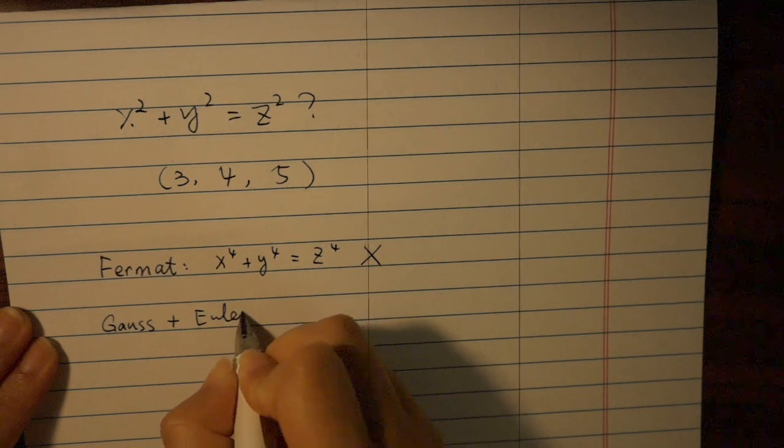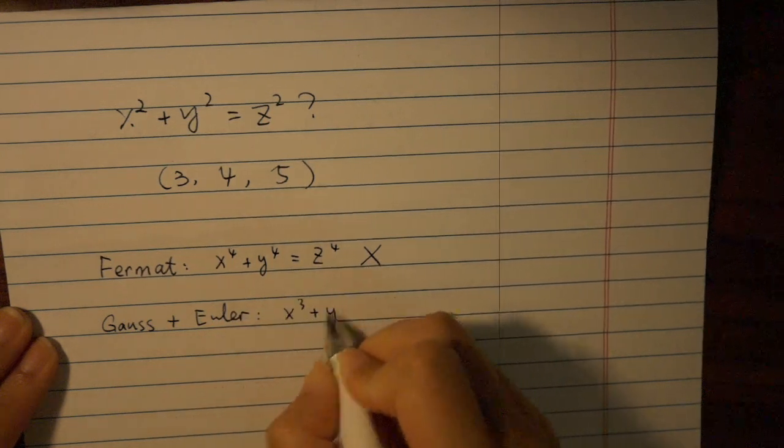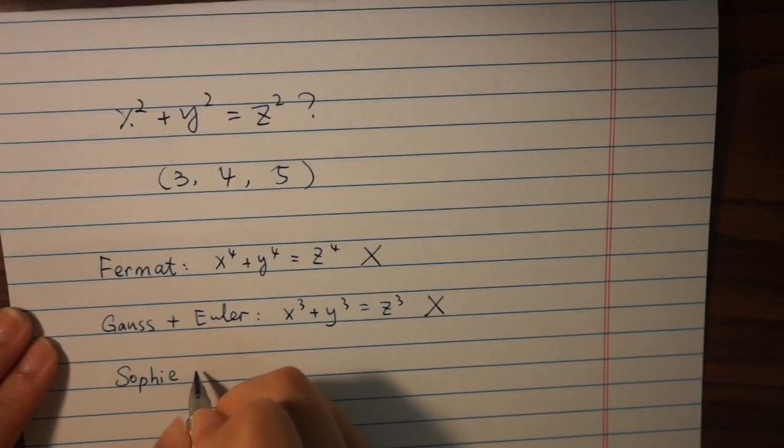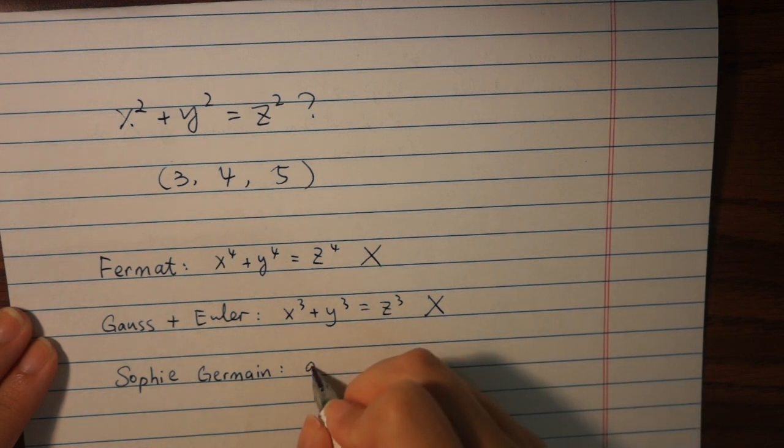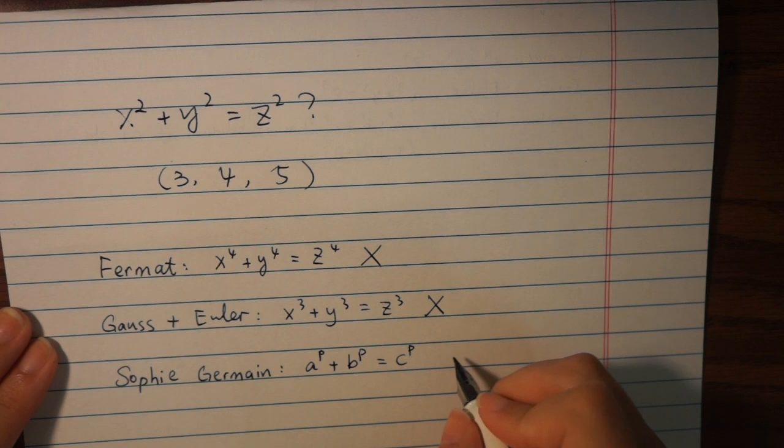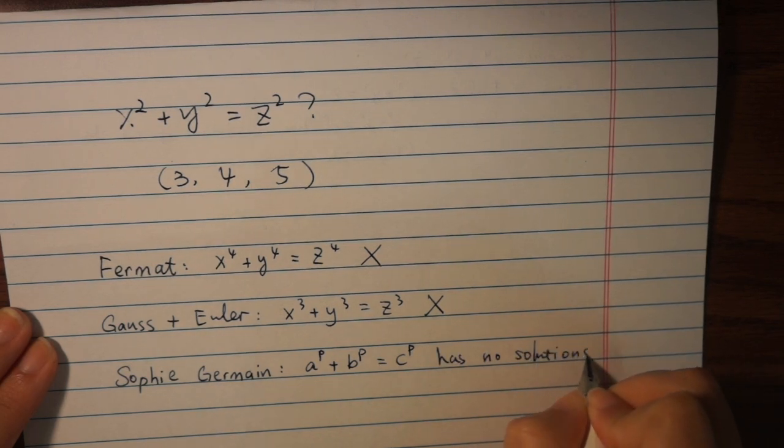Gauss and Euler proved the same thing for x cubed plus y cubed equals z cubed. The first general proof was done by Sophie Germain. She proved that a to the p plus b to the p equals c to the p has no solutions in integers if p does not divide the product of a, b, c.